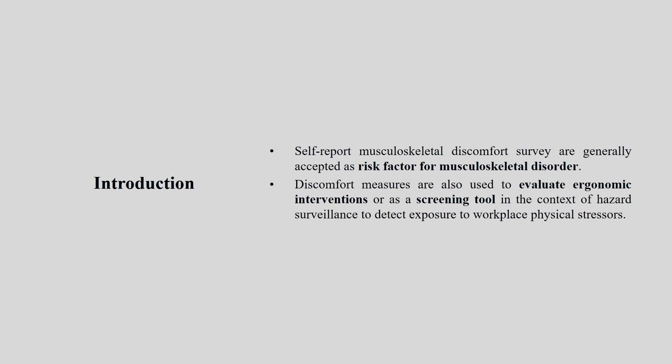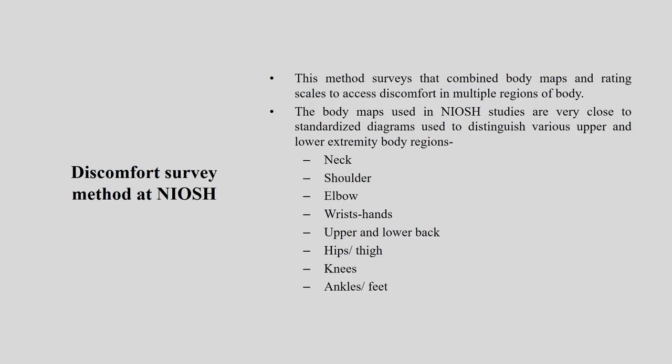As introduced in my earlier MOOC course, from the occupational perspective we have six major stressors. From this particular survey we try to understand what stressors are causing musculoskeletal discomfort in a particular population or occupation. These are the major body parts we look at — where the problem is — it may be a single body part or multiple body parts.